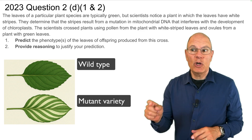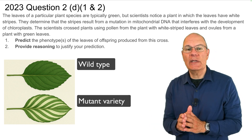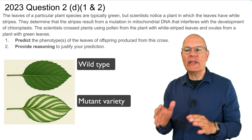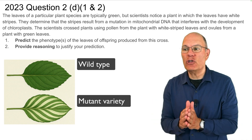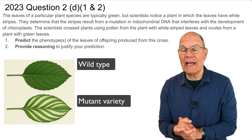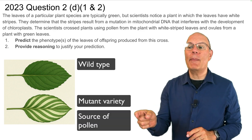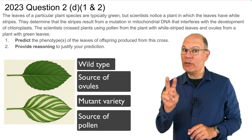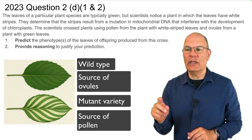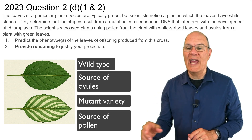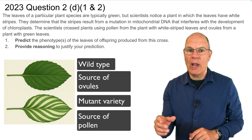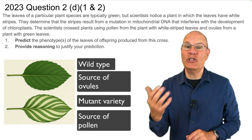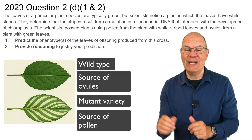Question 2D parts 1 and 2: the leaves of a particular plant species are typically green, but scientists notice a plant with white-striped leaves. They determine the stripes result from a mutation in mitochondrial DNA that interferes with chloroplast development. The scientists cross plants using pollen from the white-striped plant and ovules from a green-leaved plant. Predict the phenotypes of the offspring leaves and provide reasoning to justify your prediction. Pause the video, write your answer, then hit play.